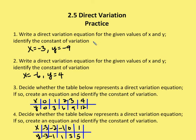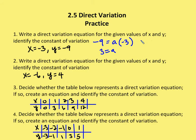We start with y equal to negative 9, which equals a times negative 3 — a is our constant of variation, that's what we don't know. So we divide negative 9 by negative 3, which gives us 3, so a is equal to 3. The direct variation equation is y equals ax, and since a is 3, we get y equals 3x.